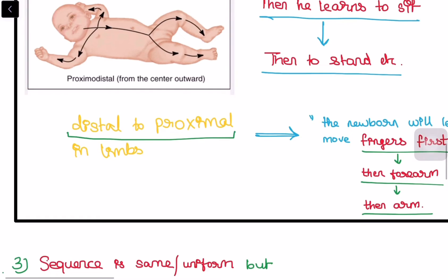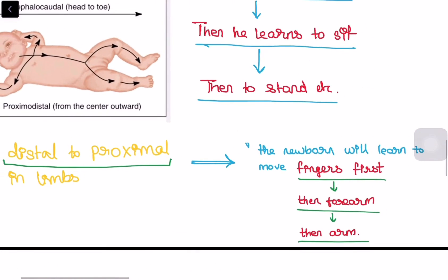The another is the another part distal to proximal in limbs. What does that mean? It means that the newborn will learn to move fingers first, then forearm and then arm.